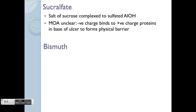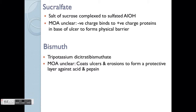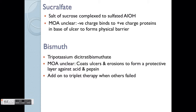Another one is Bismuth. The full name is tri-potassium dicitratobismuthate. Again, the mechanism is not entirely clear, but theoretically it forms a physical coating to prevent erosions and ulcers. All these agents provide additive physical protection in gastric ulcer, but they are not to be used as single agents — they are mainly top-up agents used alongside the others. We'll also look at triple therapy.